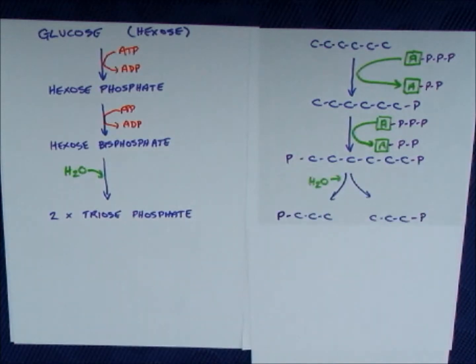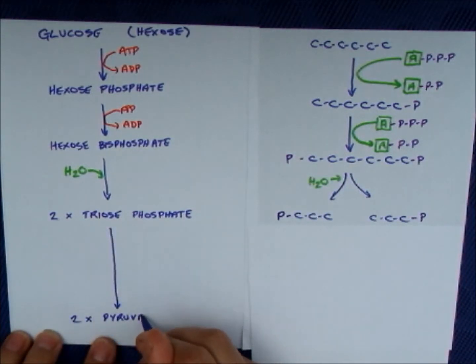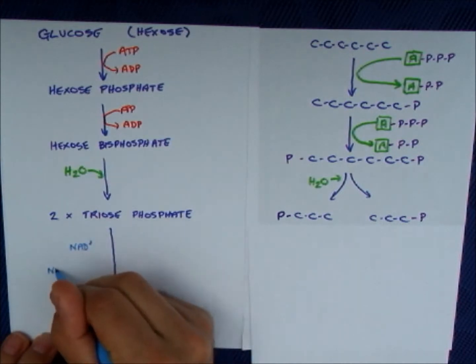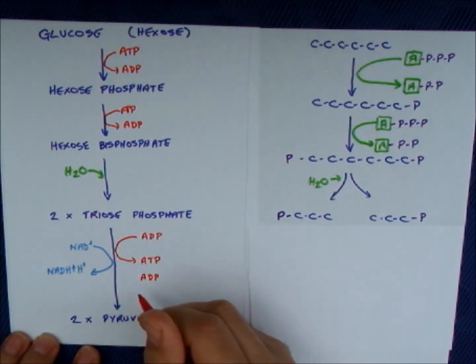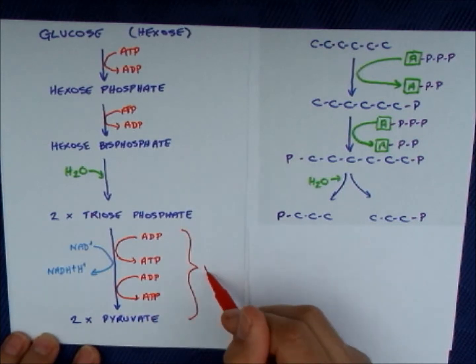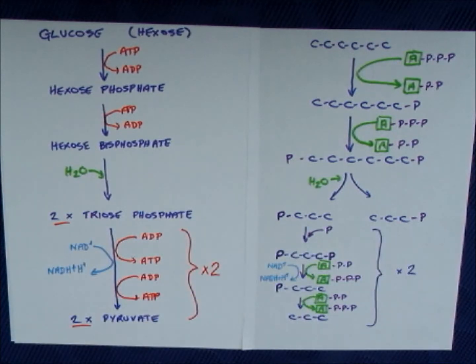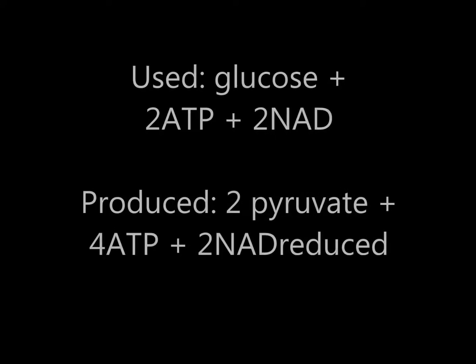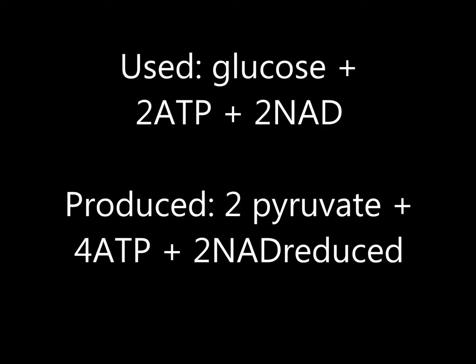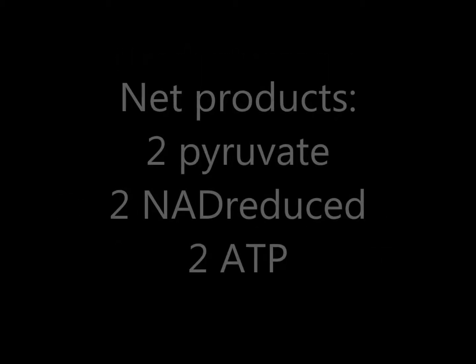The triose phosphate is then converted into pyruvate in several stages. One of those stages is the use of an inorganic phosphate to make a triose diphosphate. Those phosphates are then removed and ATP is formed. If you're taking a phosphate off a molecule in metabolism within a cell, the most useful thing you can do with that phosphate is to put it onto ADP to make ATP because ATP is such a useful molecule. So in this process, two ATP molecules are used and four ATP molecules are created, so there's a net gain of two ATP.